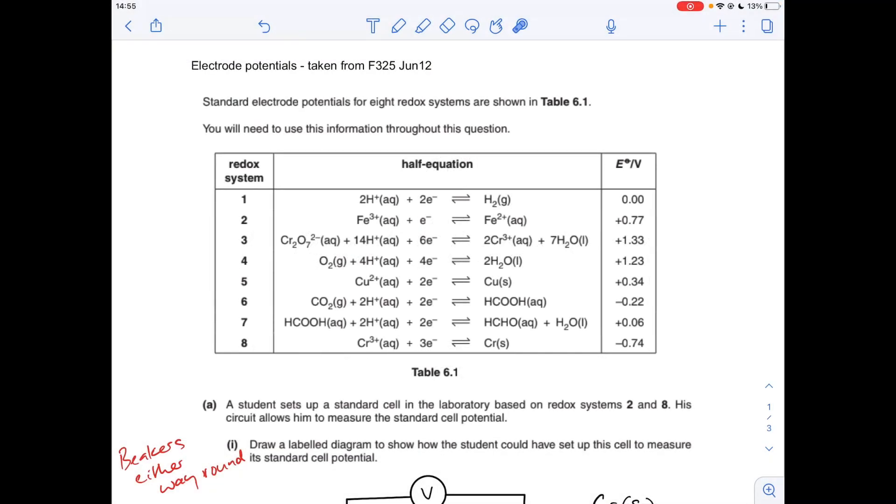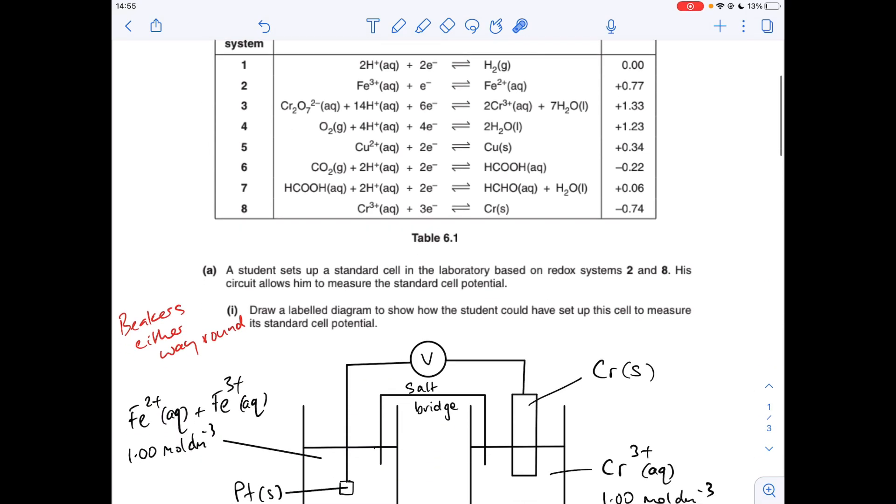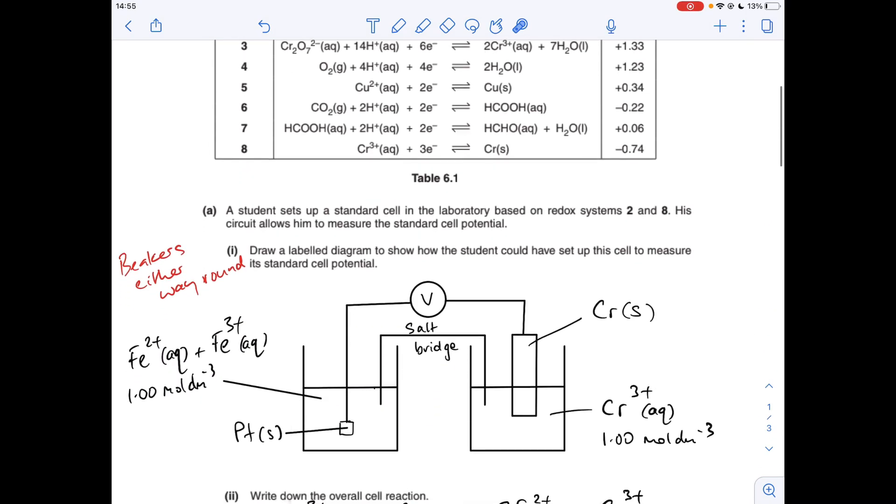Okay, so part A, we need two beakers connected via a salt bridge. The beakers can be either way around. OCR don't mind which way around you do them. So in the left-hand one, I've gone for the Fe2 plus aqueous, Fe3 plus aqueous solution, both in that beaker. It will be at one mole per decimetre cubed because it's standard cell potential. We need a platinum electrode there. You see the beakers are connected via the salt bridge. Make sure it goes into the solution. And then in the other beaker, we've got the aqueous Cr3 plus ions, one mole per decimetre cubed again. And this time we've got a chromium solid electrode. And the outside, the external circuit, connected via the voltmeter.